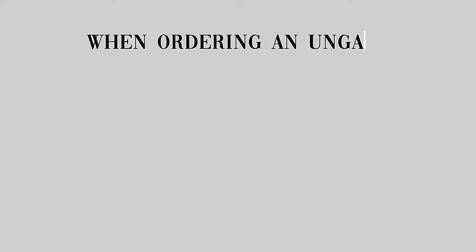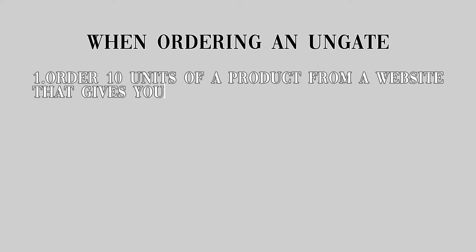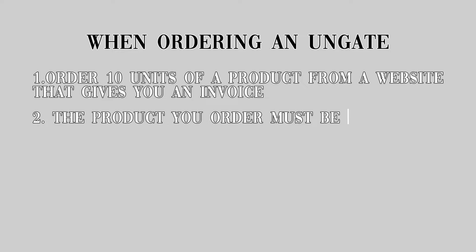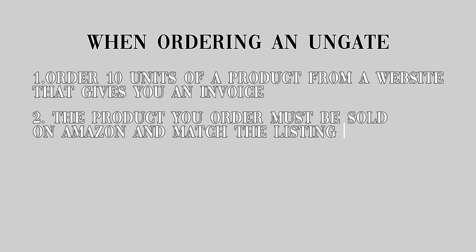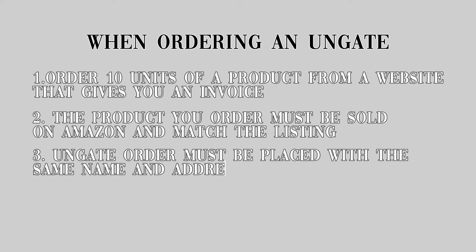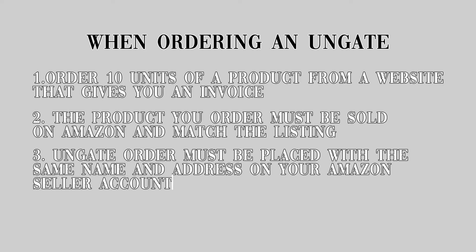In case you didn't watch my tell-all video on ungating, let me go over exactly how to place an ungate order. When doing an ungate, you must order 10 units of a product from a website that gives you an invoice. The product you're ordering must be sold on Amazon and it must match the listing that you find. And lastly, you must place this ungate order with the same name and address that is on your Amazon seller account.